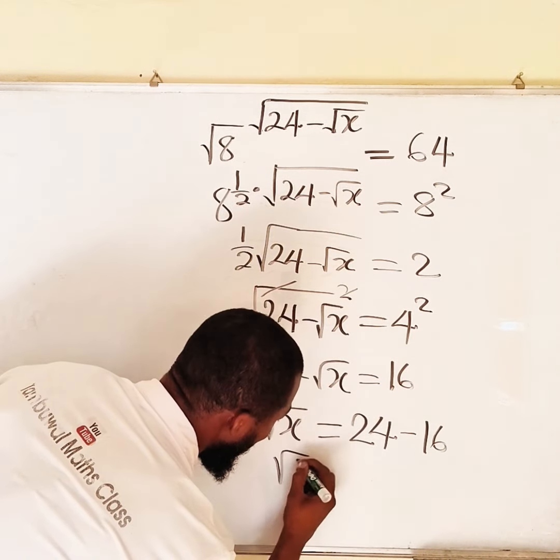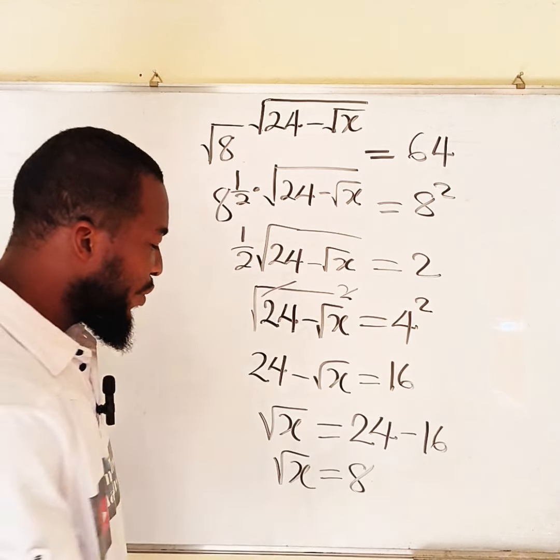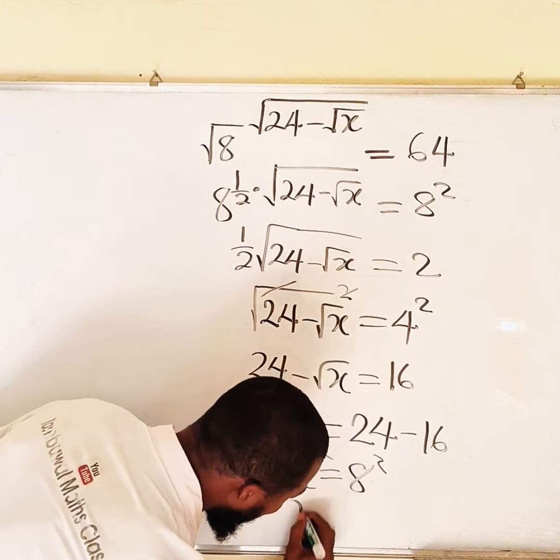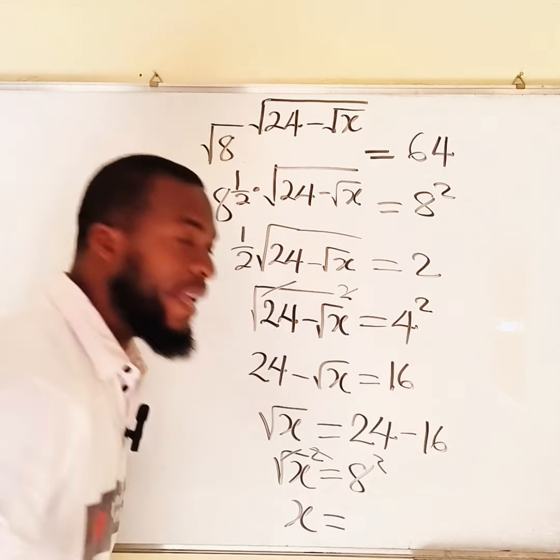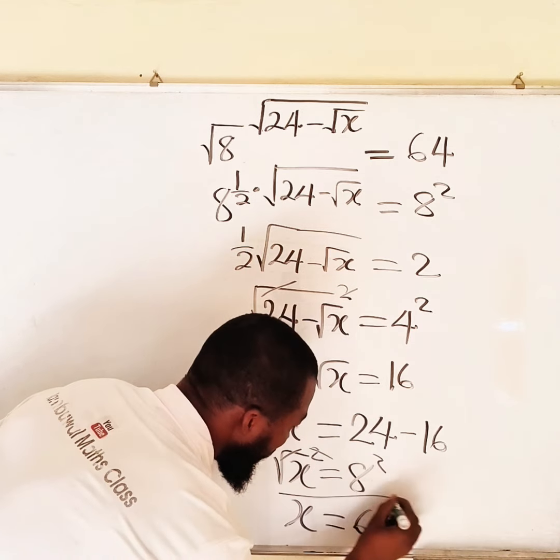What do we do? Square this, square this, such that this cancels this, leaving x equals 8 squared, which is 64. Therefore, the value of x is 64.